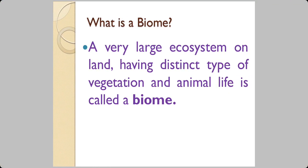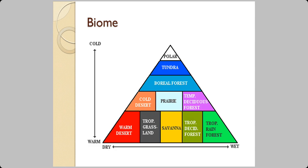There is a term called biome. A biome is a very large ecosystem on land with distinct types of vegetation and animal life. Looking at the diagram: the X axis shows dry to very wet types of forest, and the Y axis shows very warm to very cold. Each continuum will have its own biome — a large ecosystem with characteristic plants and animals.